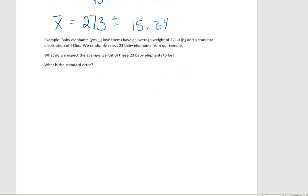Let's do one more example. So baby elephants, yes, I love them, have an average weight of 221.3 pounds, and they have a standard distribution of 68 pounds. What we do is that we randomly select 23 baby elephants from our sample. Again, what do we expect the average weight of these 23 baby elephants to be? Well, since we collected them randomly, we expect our sample to have an average very similar to our population.